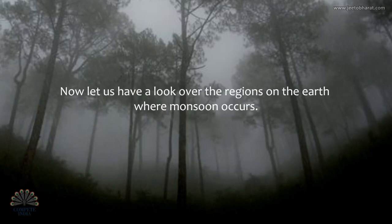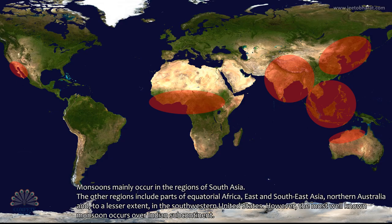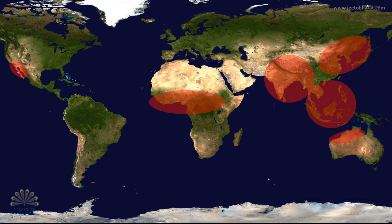Let us have a look over the regions on the earth where monsoon occurs. Monsoons mainly occur in the regions of South Asia. Other regions include parts of Equatorial Africa, East and Southeast Asia, Northern Australia, and to a lesser extent in the southwestern United States. However, the most well-known monsoon occurs over the Indian subcontinent.